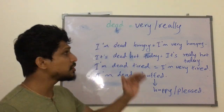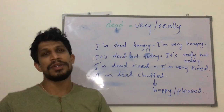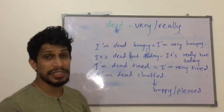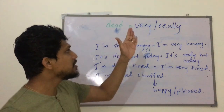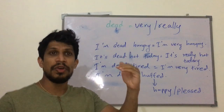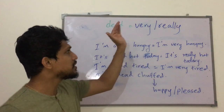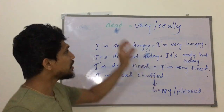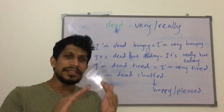Hi English Learners. Today I am going to teach you a small word that is used in informal British English a lot. The word dead means really or very. We can use this word instead of using the word very or really. We use this word before an adjective.